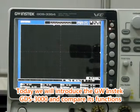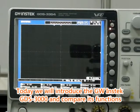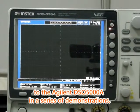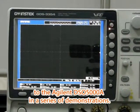Today we will introduce the GW INSTEK GDS-3000 and compare its functions to the Agilent DS-05000 in a series of demonstrations.